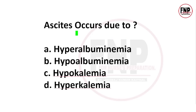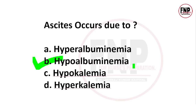Next question: Ascites occurs due to which condition? Options: hyperalbuminemia, hypoalbuminemia, hypokalemia, hyperkalemia. The right answer is option B, hypoalbuminemia. Sharir mein albumin plasma protein ki kami ho jaaye to oncotic pressure disturb ho jaata hai, jiske kaaran blood vessels ka fluid extra tissue spaces mein shift ho jaata hai aur peritoneal cavity mein accumulate hota hai — yahi condition ascites kehlati hai.